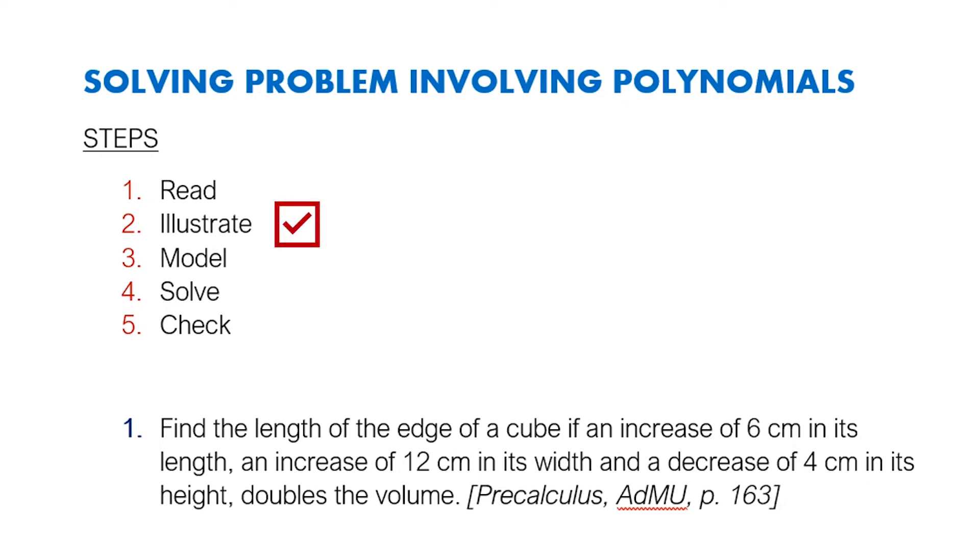Next is you have to illustrate. Draw the figure so you can understand what you're going to do. Second, represent the unknown - usually we use x to represent the unknowns. We have to model the situation. That means we have to create a polynomial function or equation for the situation. And we have to solve. We will do synthetic division, applying theorems such as the factor theorem, the remainder theorem, the rational root theorem to solve for the values of x that will satisfy the equation. And then lastly, you have to check. Read the problem again and determine whether the values you came up with are really the solutions of the problem.